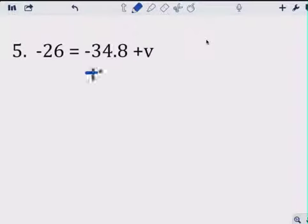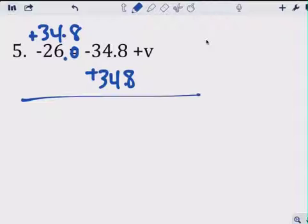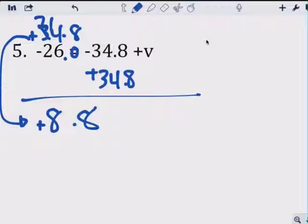Here, you add 34.8, add 34.8, I'm going to put the bigger number on top. 812. Oh, not 12, so sorry, my goodness, borrow, that's a 2, that's 8, 8.8, positive, because the bigger number always takes the sign. That equals to the letter V.